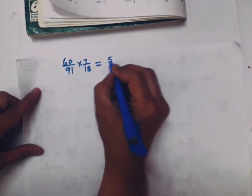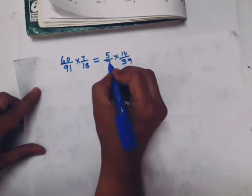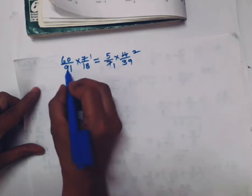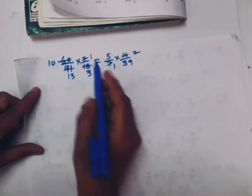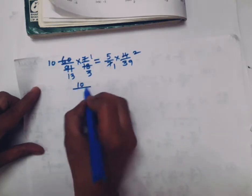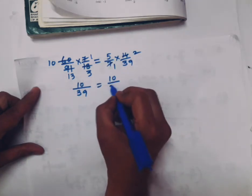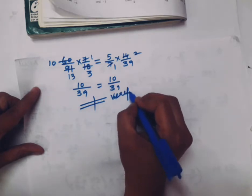7/18. Six twos are 12, six threes are 18. 7 twos are 14, 13 threes are 39. 60/91 × 7/18. This should equal 5/7 × 14/39. 7 ones are 7, 7 twos are 14. 5 twos are 10, 13 threes are 39. Both the sides are equal. Answer is verified.